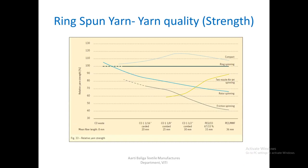Now we go to the yarn quality part. This chart shows on the x-axis the fibre being used — cotton from 20 mm to 25 mm to 30 mm, meaning staple length is increasing. We also see polyester-cotton blend and other man-made blends from 33 mm to 36 mm. On the y-axis we are looking at relative yarn strength, relative to ring spun yarn strength as the base, and comparing how other systems perform.